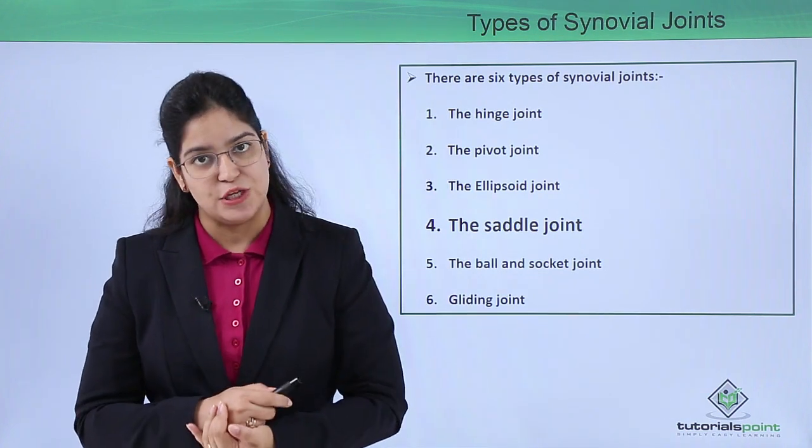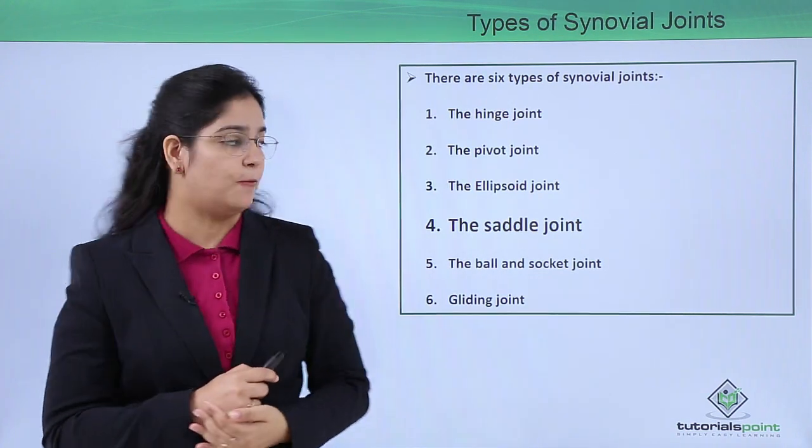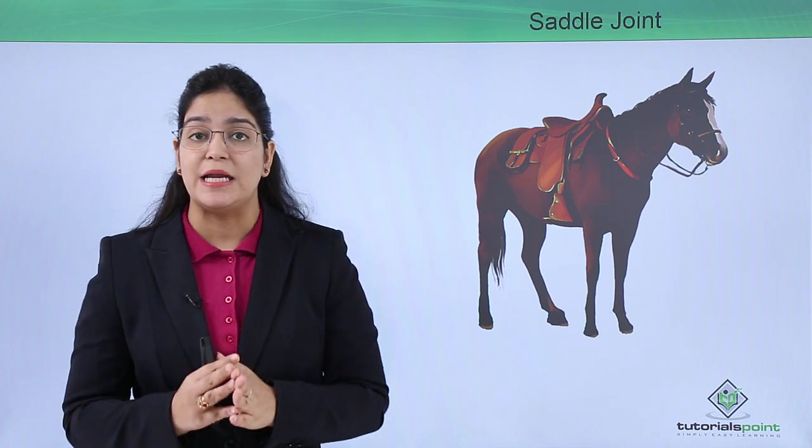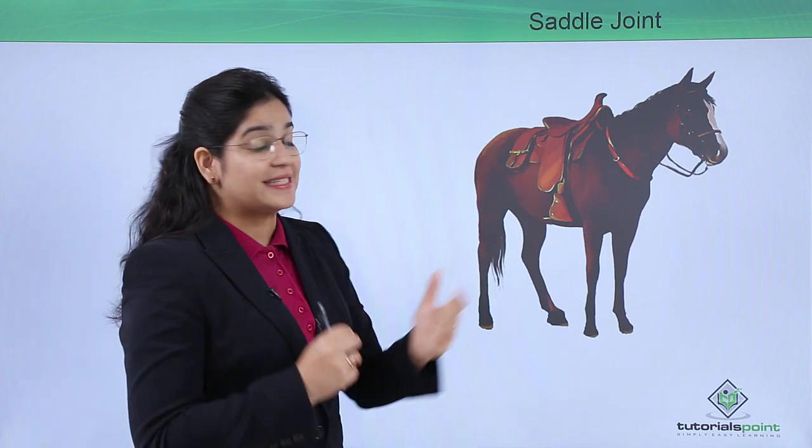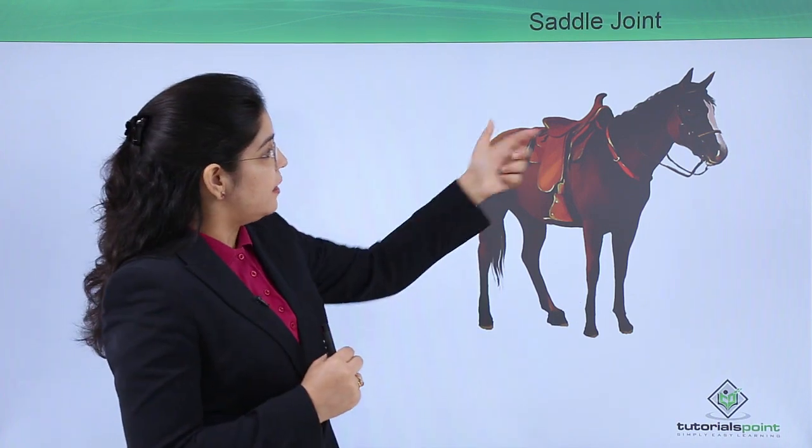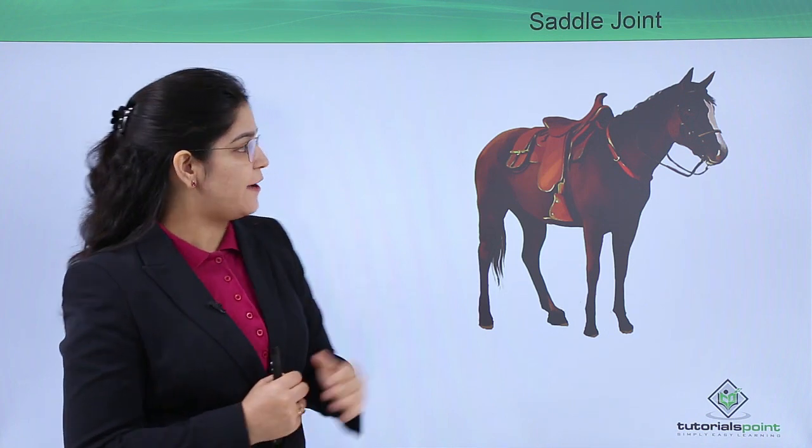Which is the most movable joint among all the joints. Now first of all, let's learn why this saddle joint is called the saddle joint. The meaning of saddle is a seat which is present on a horse.